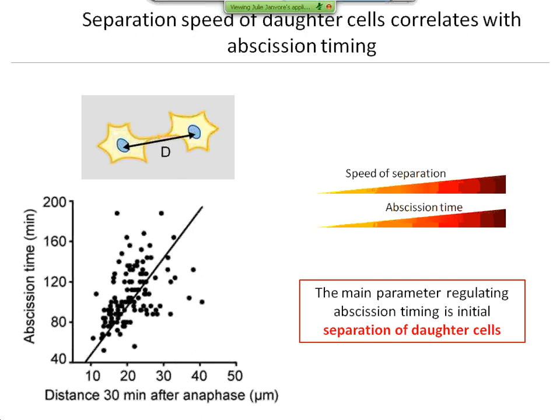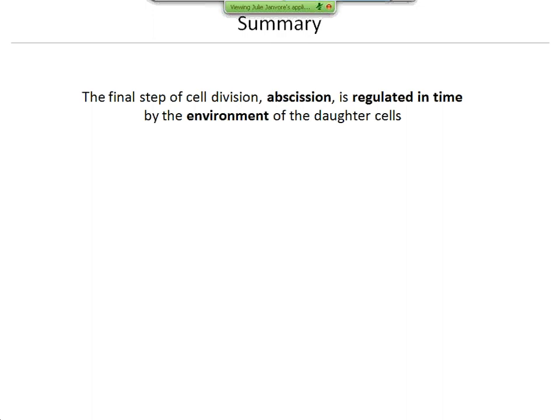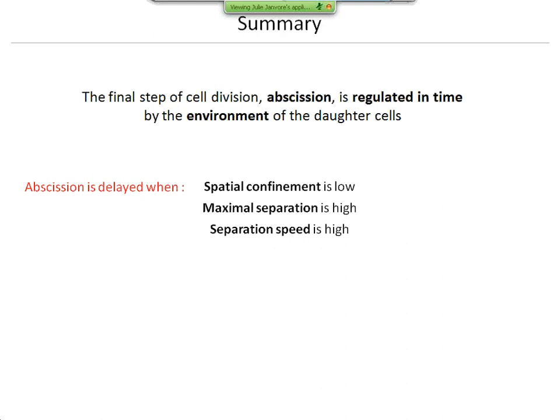To summarize what I showed: the final step of cell division, abscission, is regulated in time by the environment of the daughter cells. Abscission is delayed when the spatial confinement of the daughter cells is low, when the maximal separation of the daughter cells is high, and also when the separation speed is high. At some point we asked what could be the mechanism involved in this regulation. So to finish the presentation, I would like to show a bit of the study we have done to investigate this mechanism — it's more of a high-resolution and biomechanical measurement study.